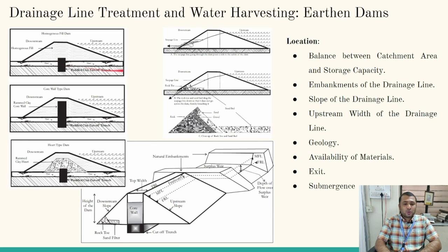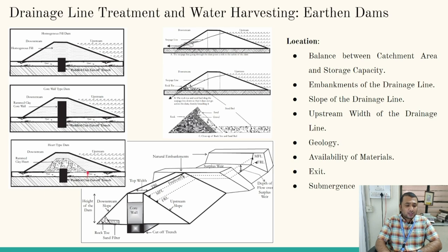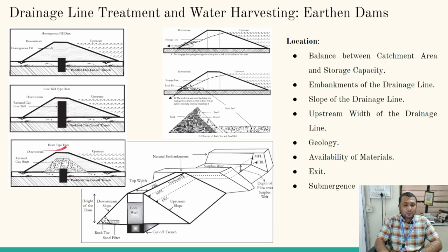Looking at the figure, there are three types of earthen dams: homogeneous earthen dam, diaphragm earthen dam, and core earthen dam. The homogeneous one uses a single uniform material. The central core type has a barrier in the center. The zone or diaphragm type is another variant. The kind of cross-section selected is defined by the locally available material and its strength, and based on that we decide what section to adopt.